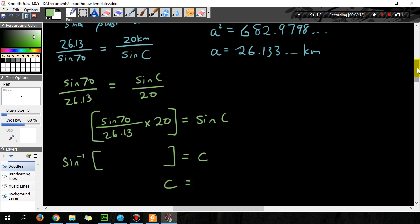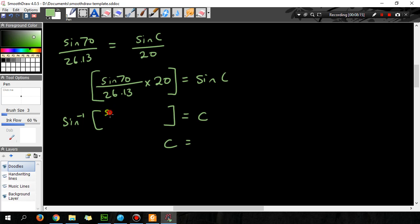So let's put that into the calculator. Sin 70 over 26.13 times 20, put that in your calculator. So I got 0.7192 and so on.